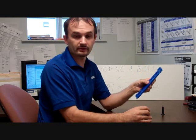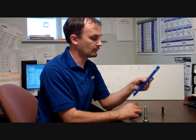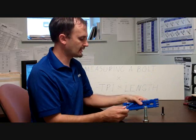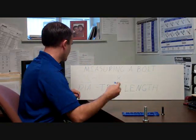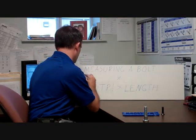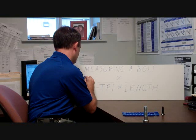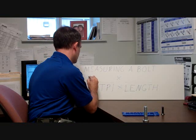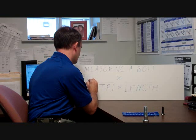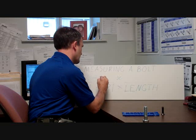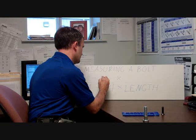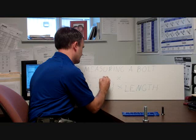So we discovered our threads per inch. It would be 10. So we're going to write that into our formula over here. We had a 3/4 inch diameter bolt. We have 10 threads per inch.